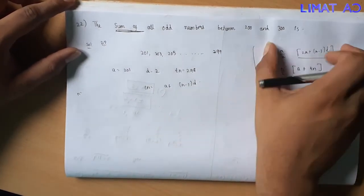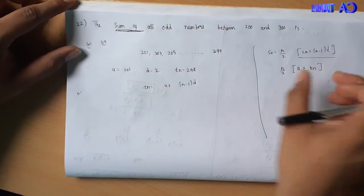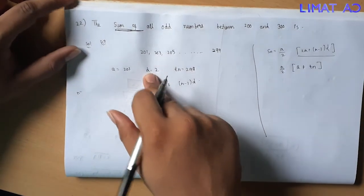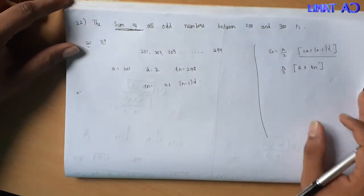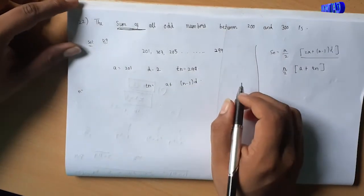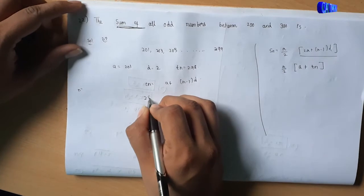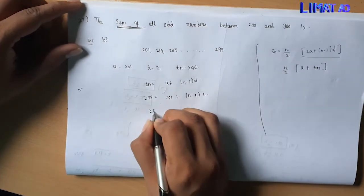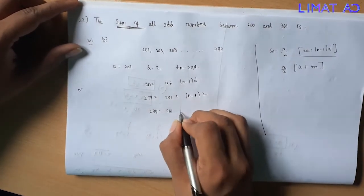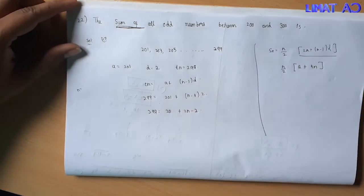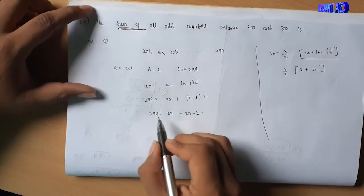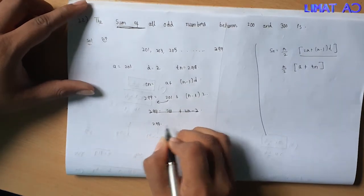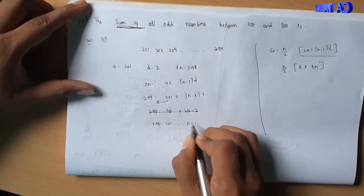The tn value is 299. Substituting into the formula: 299 equals a plus n minus 1 into d, so 299 equals 201 plus 2 into n minus 1. Solving: 299 minus 201 equals 2 into n minus 1, which gives 98 equals 2 into n minus 1.